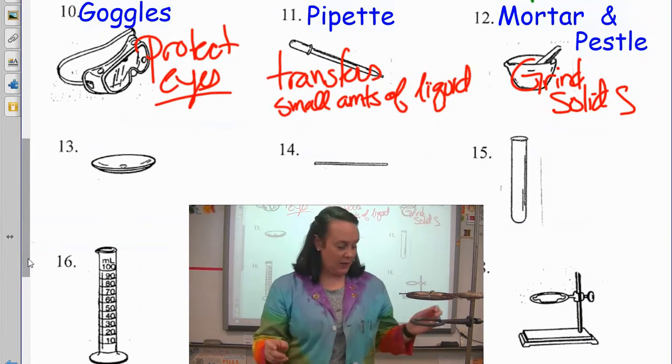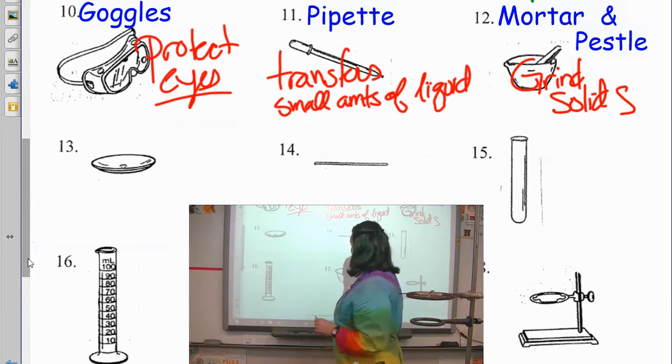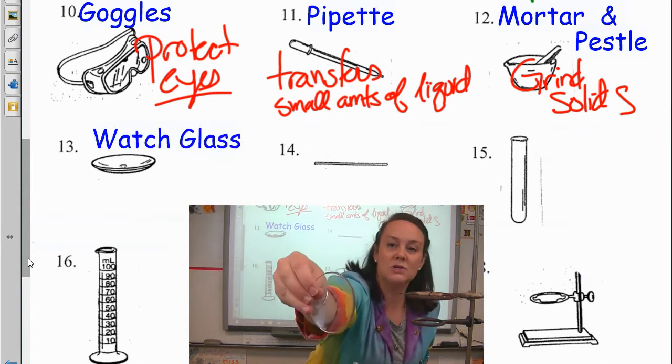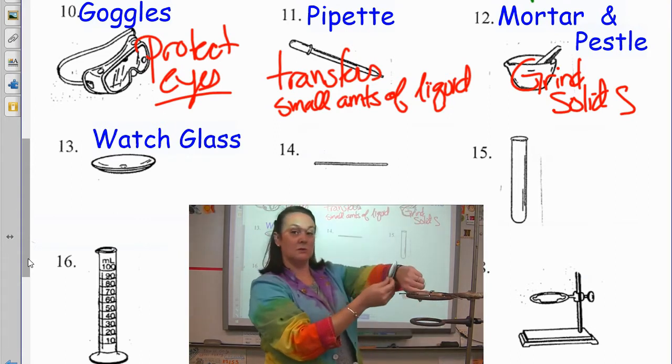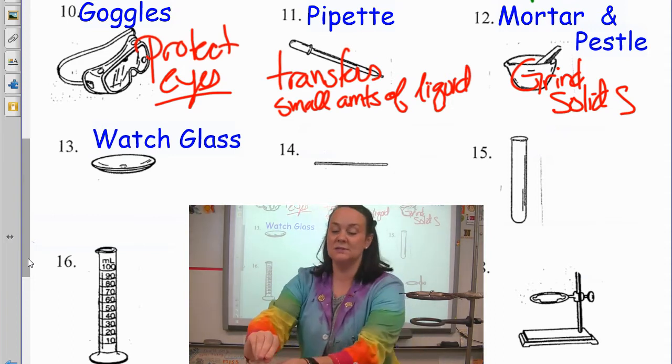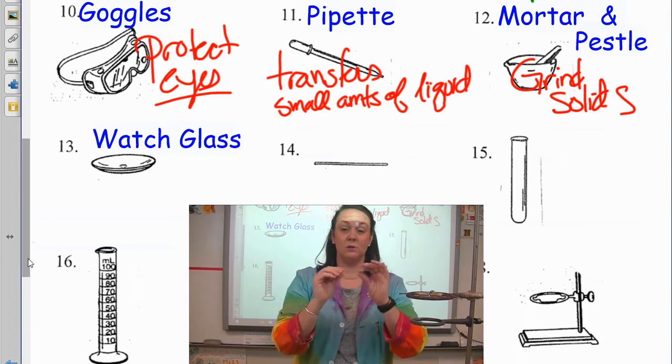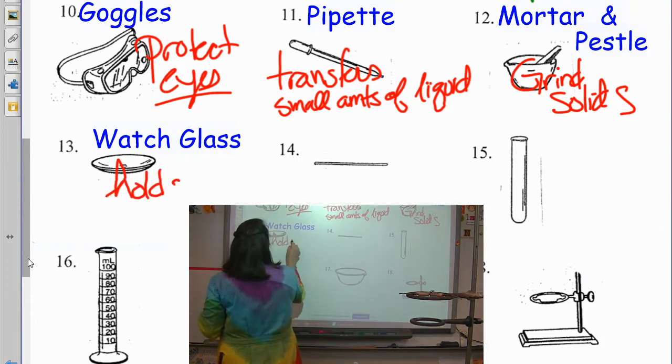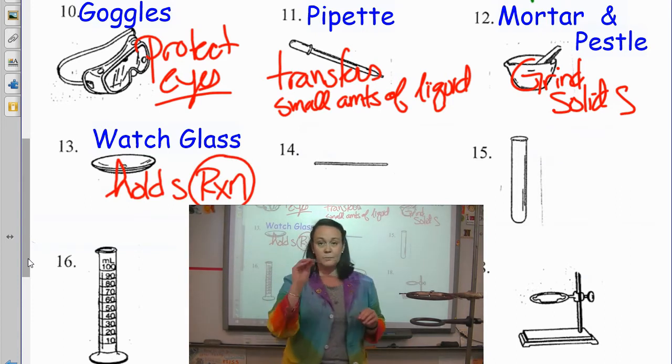Thirteen looks a little interesting. Let me find him. Thirteen is called a watch glass. I know it looks pretty. And maybe I'll take some pictures of these. But it's just a piece of glass, a watch glass. And it comes because it looks like a glass out of the front of a watch. They can be used as lids to cover up a beaker. But the number one reason that we use these is to hold a reaction. So, hold. And I write reactions like that.